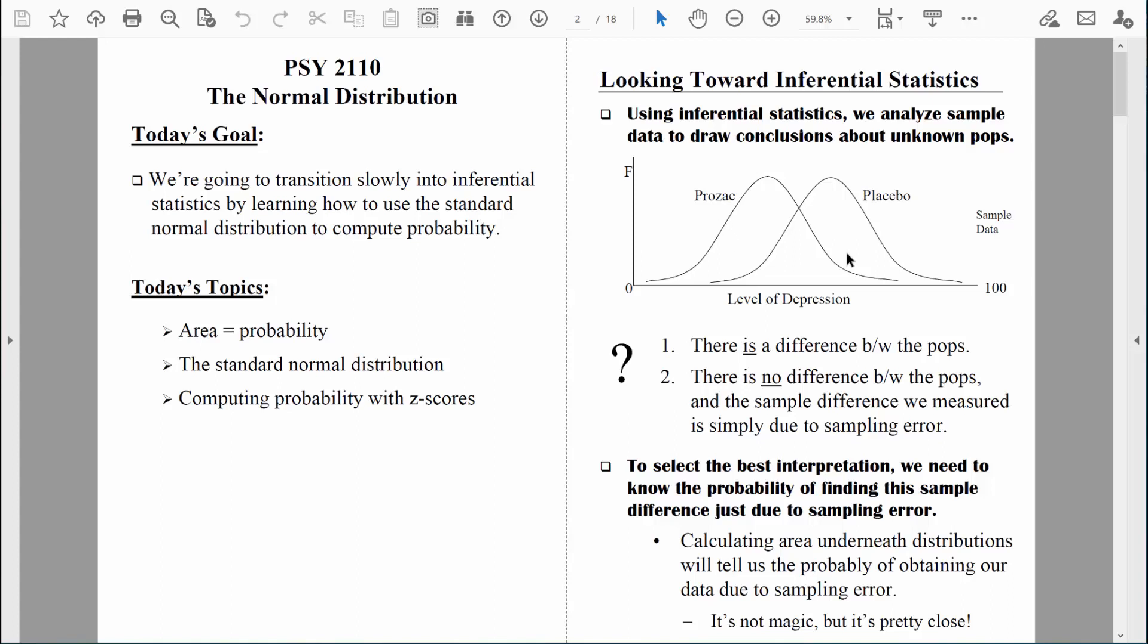I know that process sounds kind of complicated, and in some respects it is, but I'm going to show you how we can compute that probability, the probability of finding these differences just by chance, by computing the area underneath a sampling distribution. Once I show you a few tricks, a few simple formulas, and a few tables that we will consult, that's going to be pretty easy.